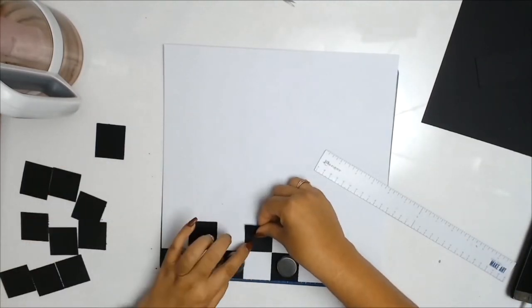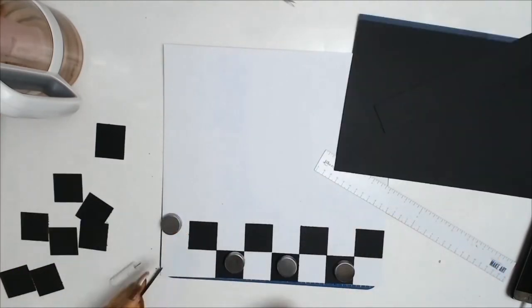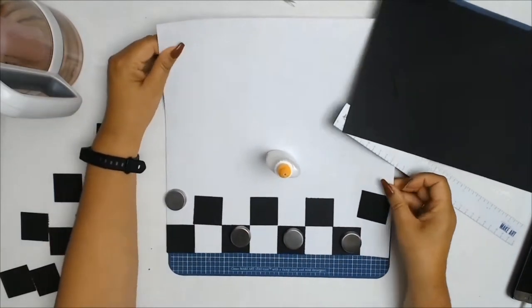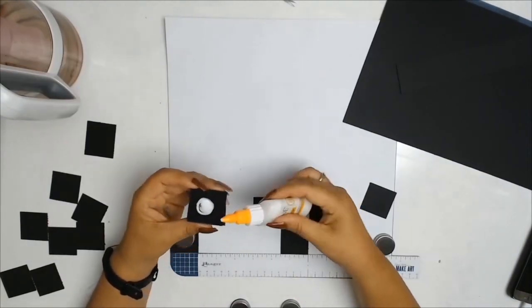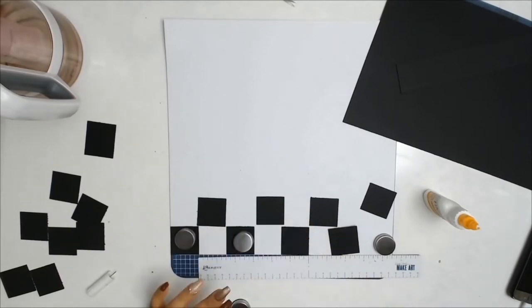I will confess it took me about 20 minutes to make my chess board by the time I cut out all the little pieces and then glued all the pieces onto the white card stock. But it looks, if I may say so myself, absolutely amazing.